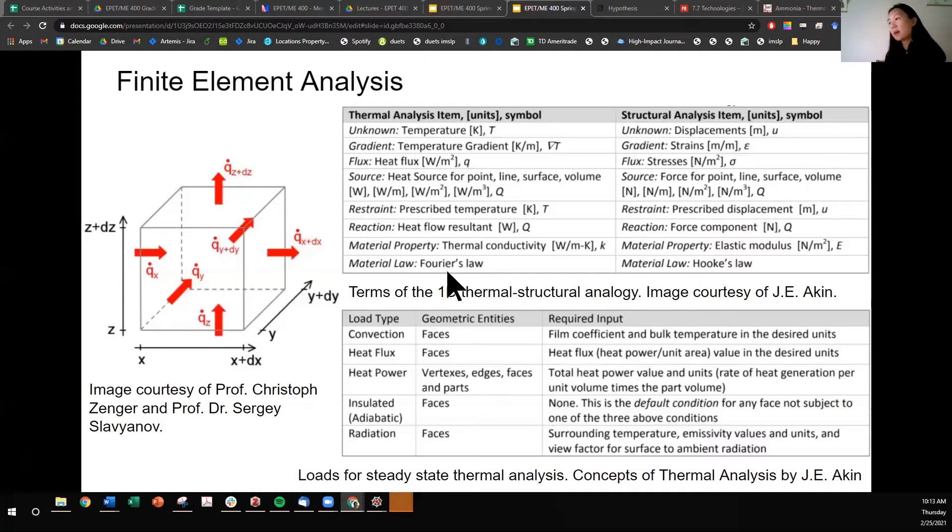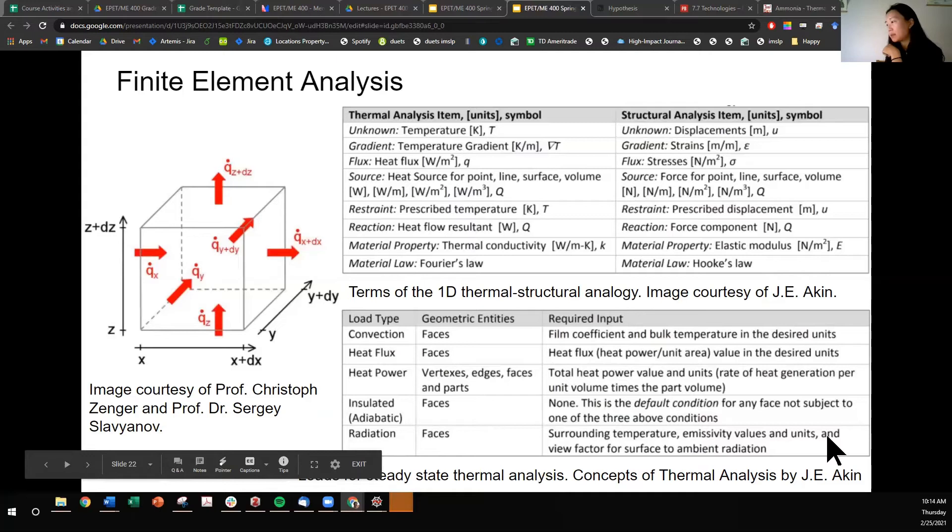So we were talking about mechanisms of heat transfer that were conduction, convection, radiation. We apply these different mechanisms in different geometric entities. So convection is going to act across a face. So is heat flux. Radiation is also going to act across a face. And I don't want to go into the other one of these. For these different load types, you're going to need bulk temperature, film coefficients. We don't care about convection, so don't worry about that. We're going to need to know for radiation surrounding temperature, emissivity value, and view factor.